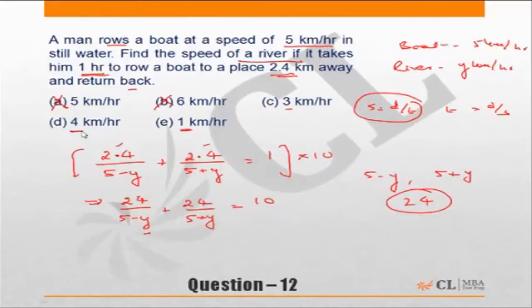Okay, so the answer in this case would be if we put 3, it becomes 24 upon 2, which is 12. Incorrect choice. 3 kilometers is incorrect because when I put y equal to 3, this portion becomes equal to 12.